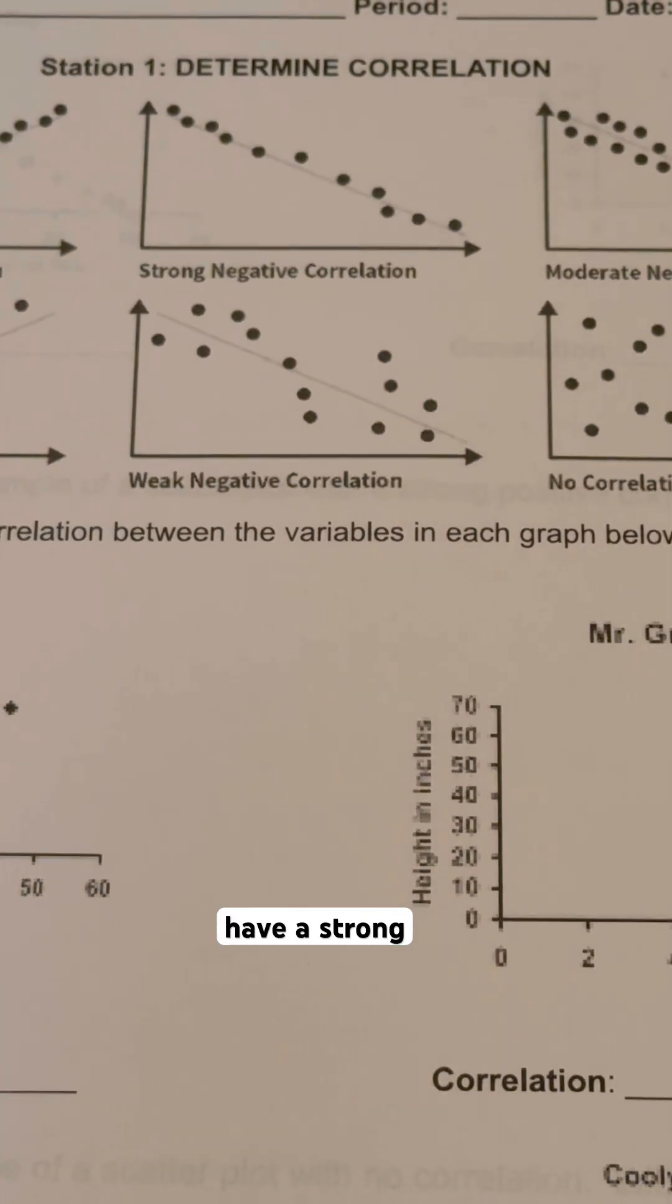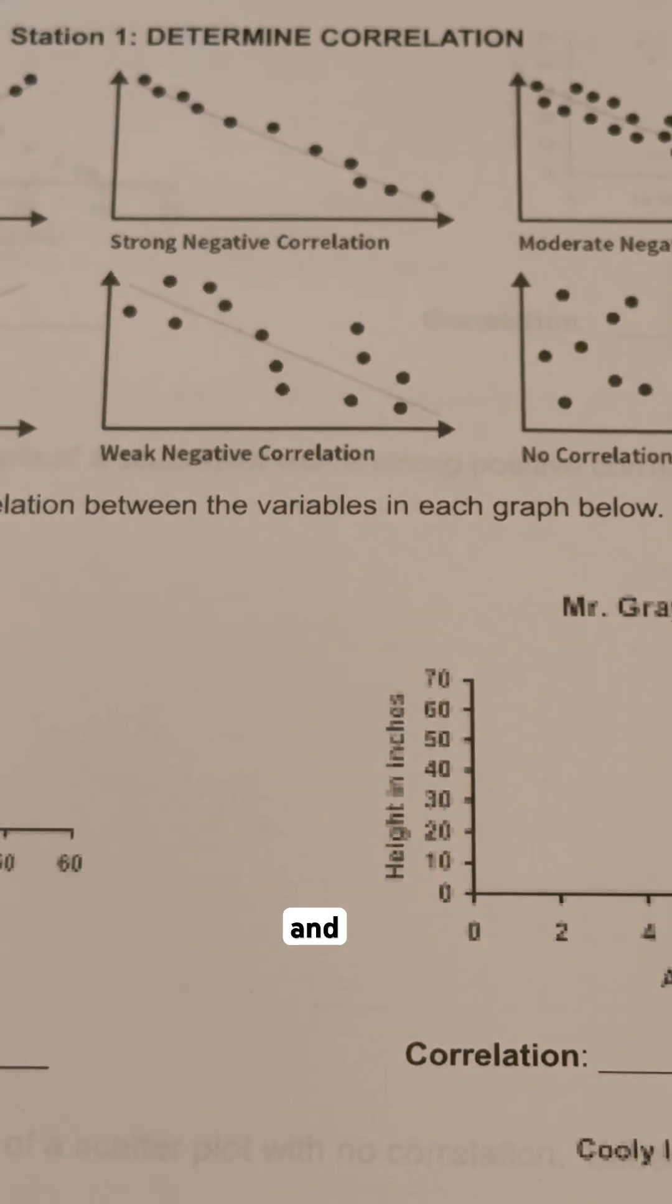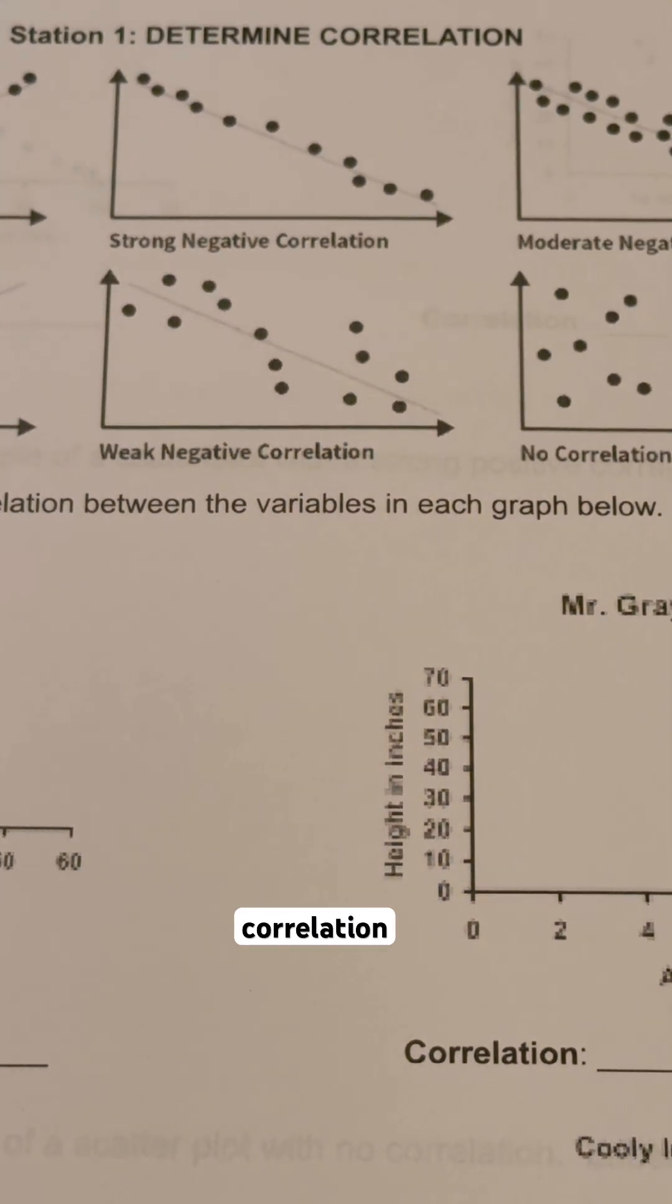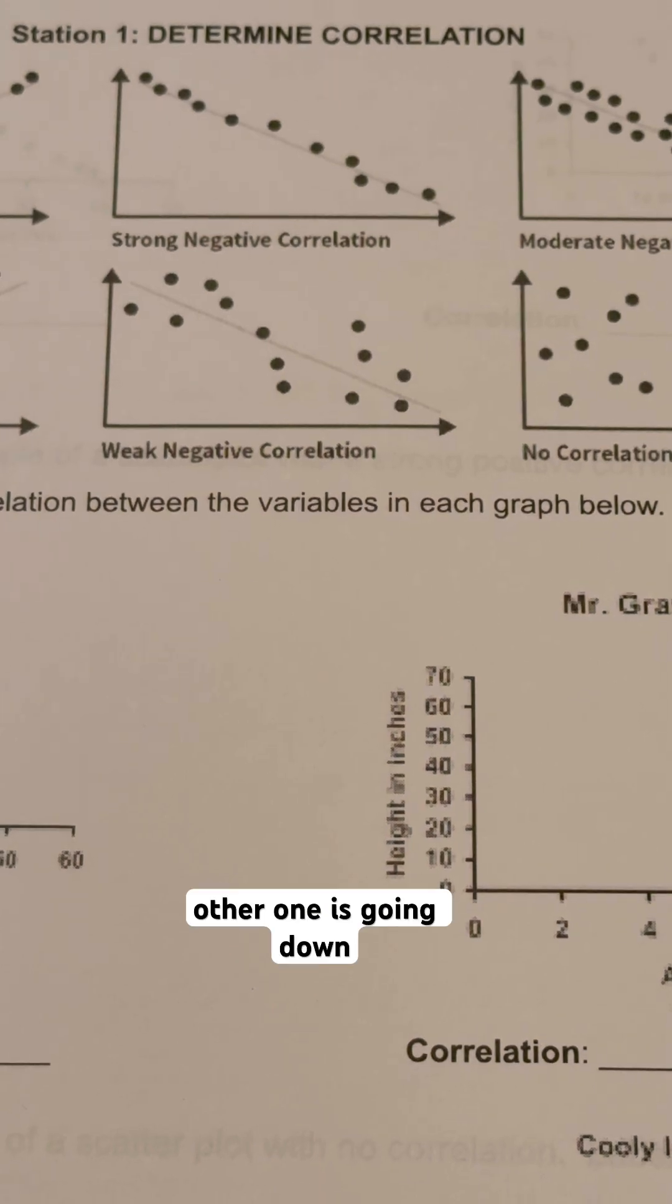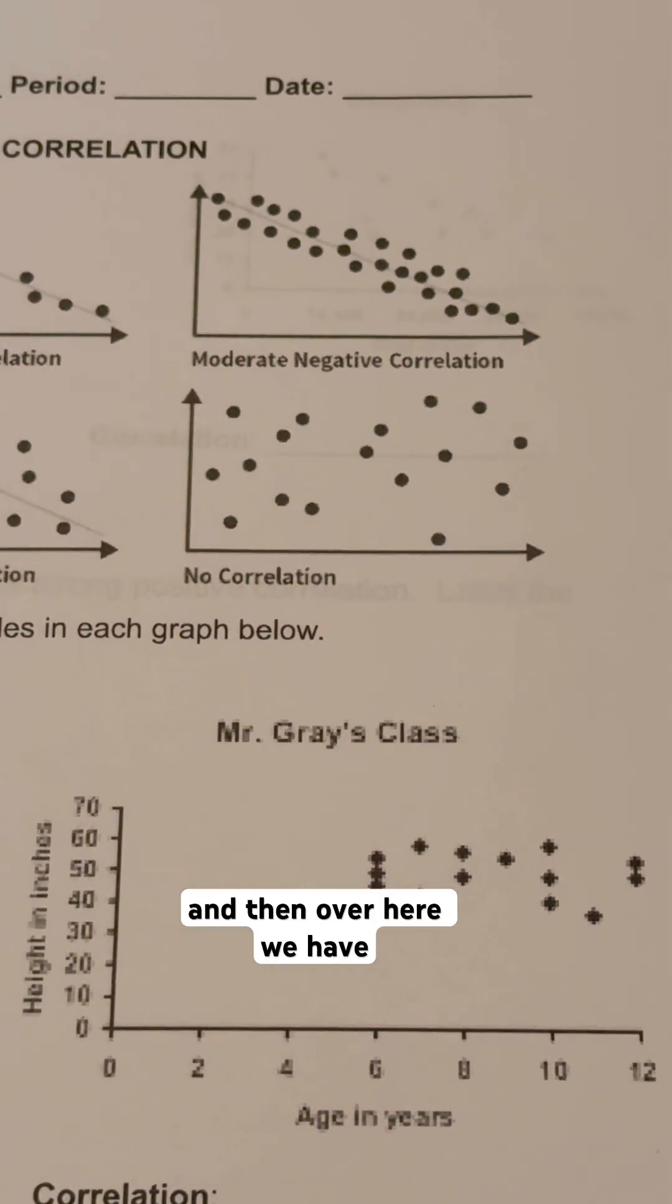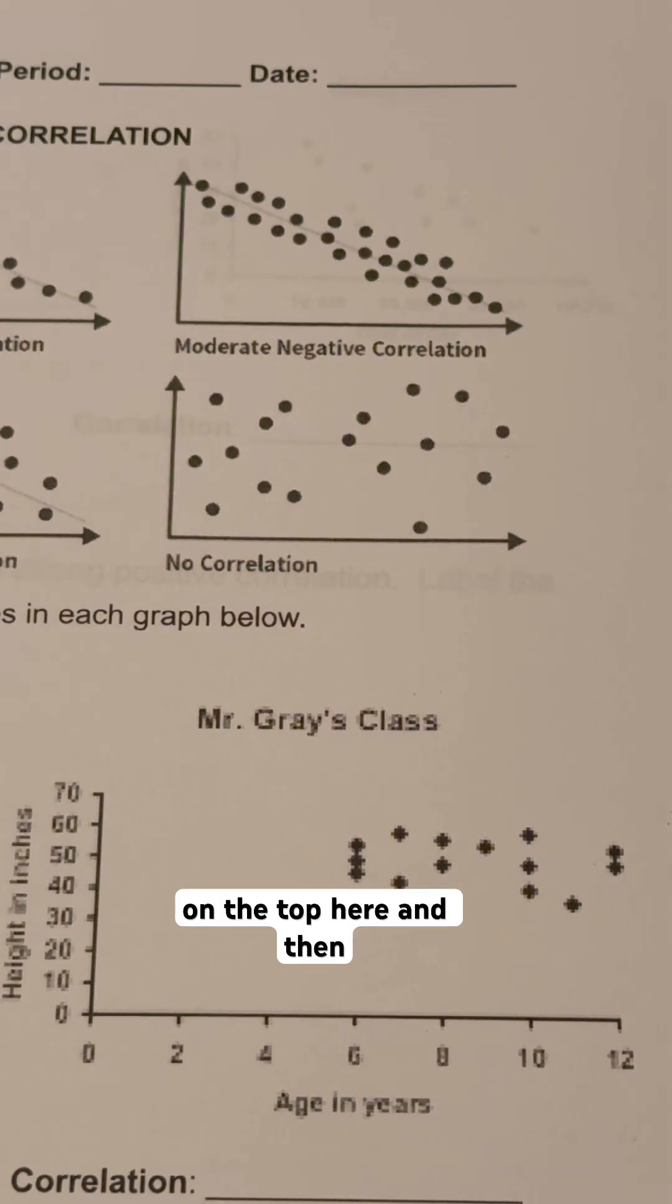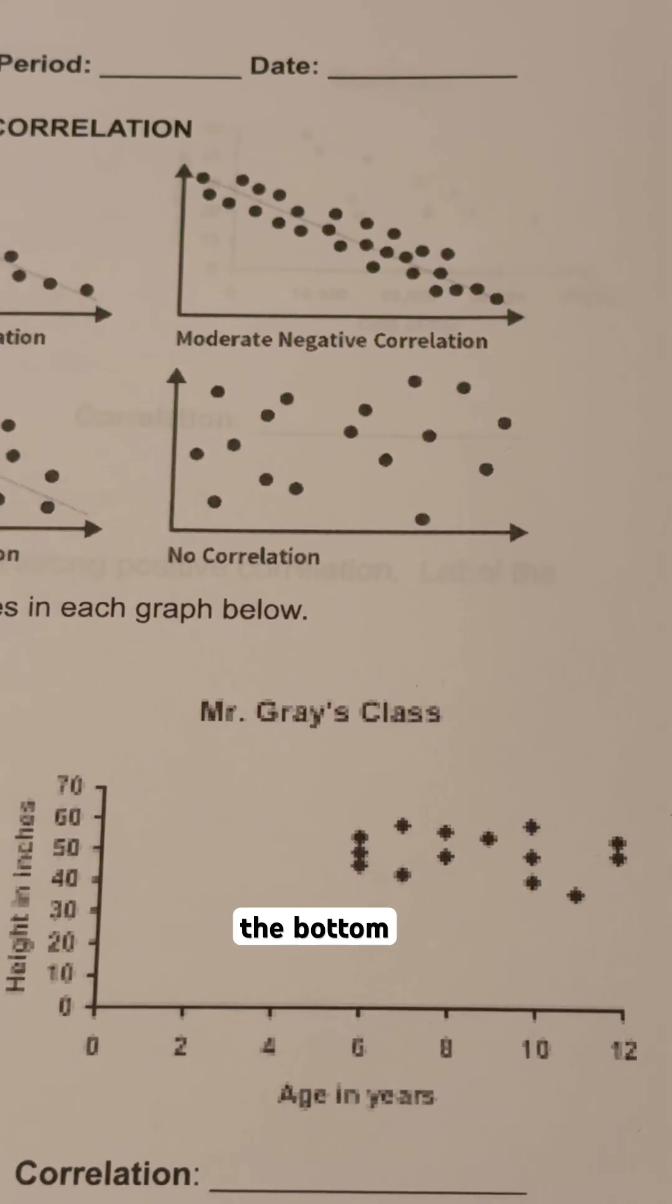And then over next to it, we have a strong negative on the top here and then a weaker negative correlation below it. As one is going up, the other one is going down. And then over here, we have a moderate negative correlation on the top and then no correlation on the bottom.